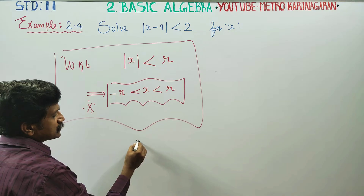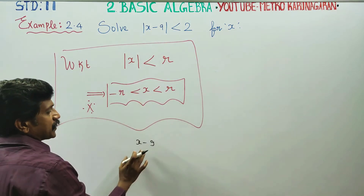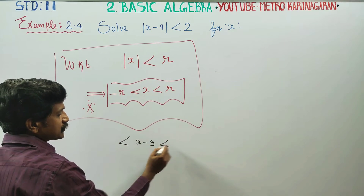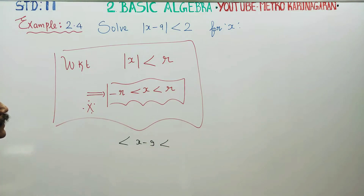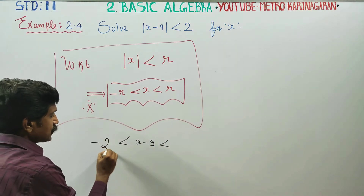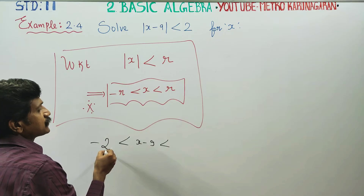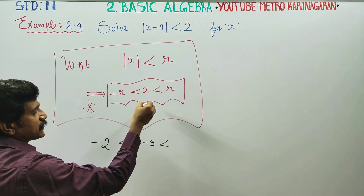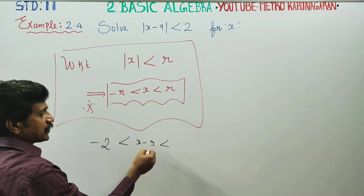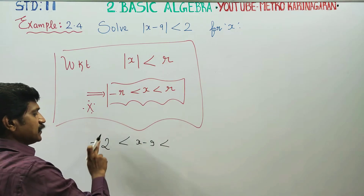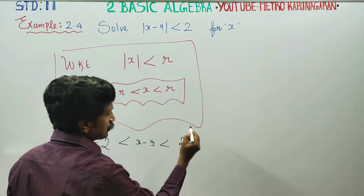Now remove the modulus. We know that when the modulus is removed, this gives minus 2 less than x minus 9 less than plus 2.